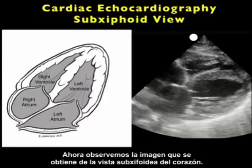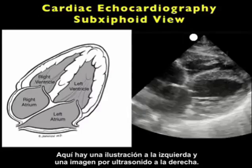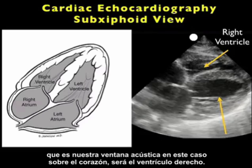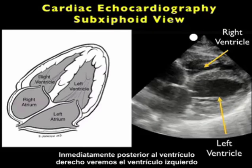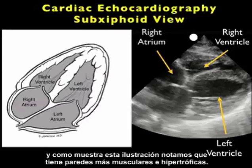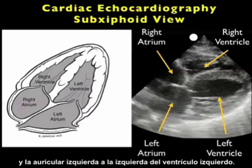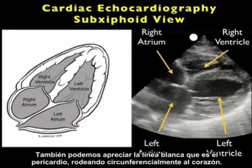Let's take a look at the image you'll obtain from the subxiphoid view. Here's a pictorial to the left and an ultrasound image to the right. The first chamber we'll encounter directly below the liver — our acoustic window in this case — will be the right ventricle. Immediately posterior to the right ventricle we'll see the left ventricle, which has more muscular and hypertrophic walls. From this plane we'll also image the right atrium to the left of the right ventricle, and the left atrium just to the left of the left ventricle. We can also appreciate the white line that is the pericardium circumferentially surrounding the heart.